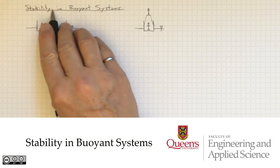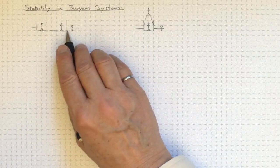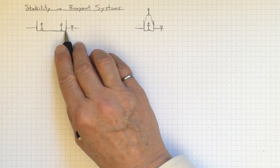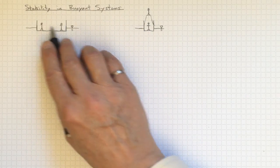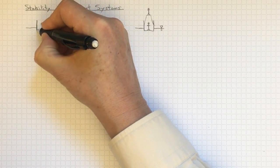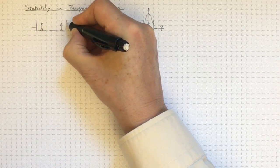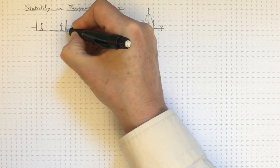Now we're going to look at stability in buoyant systems. If I have a boat and it's floating and it's not changing its orientation, then that boat is stable. The concepts are fairly straightforward, and we can illustrate them with these nice simple little square boats.